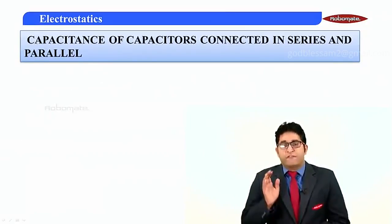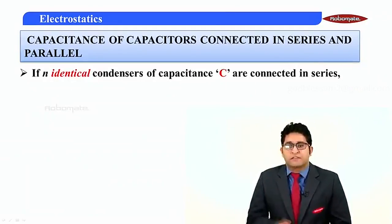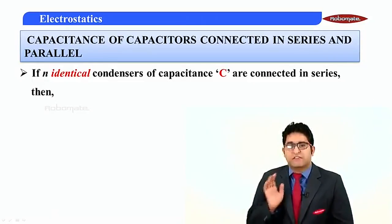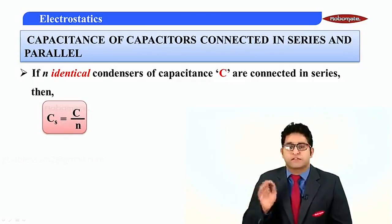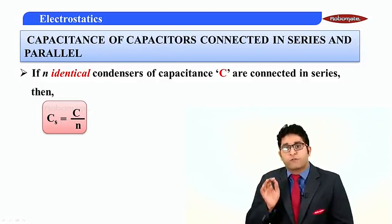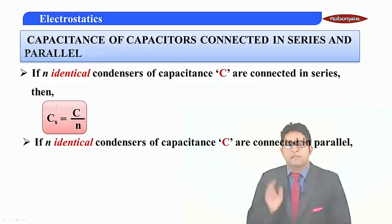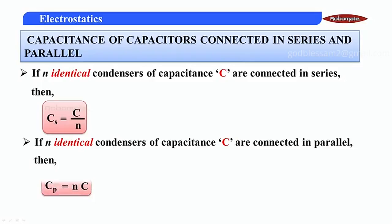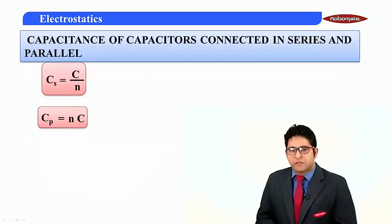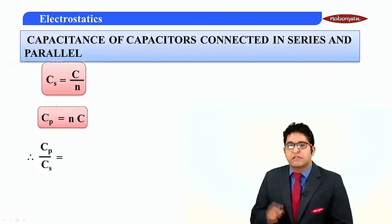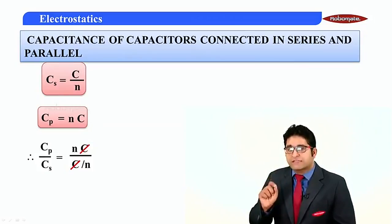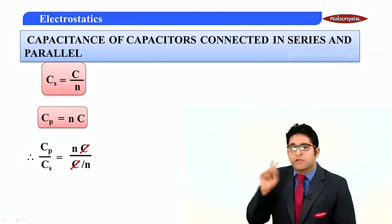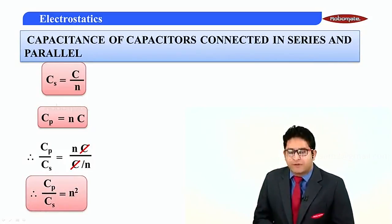To summarize: if N identical capacitors are connected in series, Cs = C/N. If N identical capacitors of capacitance C are connected in parallel, Cp = N·C. Now let us take the ratio Cp/Cs. We get Cp/Cs = N·C / (C/N). Cancelling C and bringing N from the denominator to the numerator, we get Cp/Cs = N².